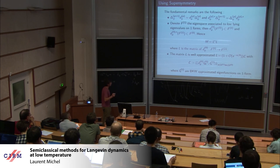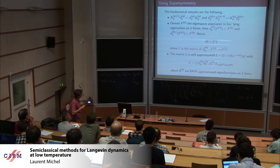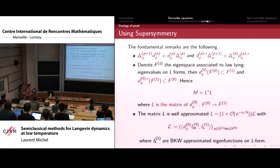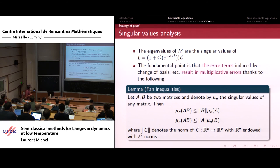This intertwining relation tells you that d_phi^{(0)} maps eigenvalues of the Witten Laplacian on zero forms into eigenvalues on one forms. Your matrix M can be written as L*L, where L is the matrix of this operator. The singular values of L, or eigenvalues of L*L, enjoy a nice set of inequalities: when you want to compute the singular values of A times B, you have such bounds. This gives multiplicative error terms, which enter in a fundamental way in the analysis.